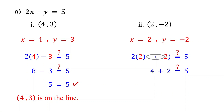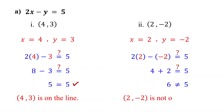Negative times negative is positive, so 4 plus 2 is 6. Therefore, since 6 is not equal to 5, the point 2 comma negative 2 is not a solution to the equation, so it is not on the line.